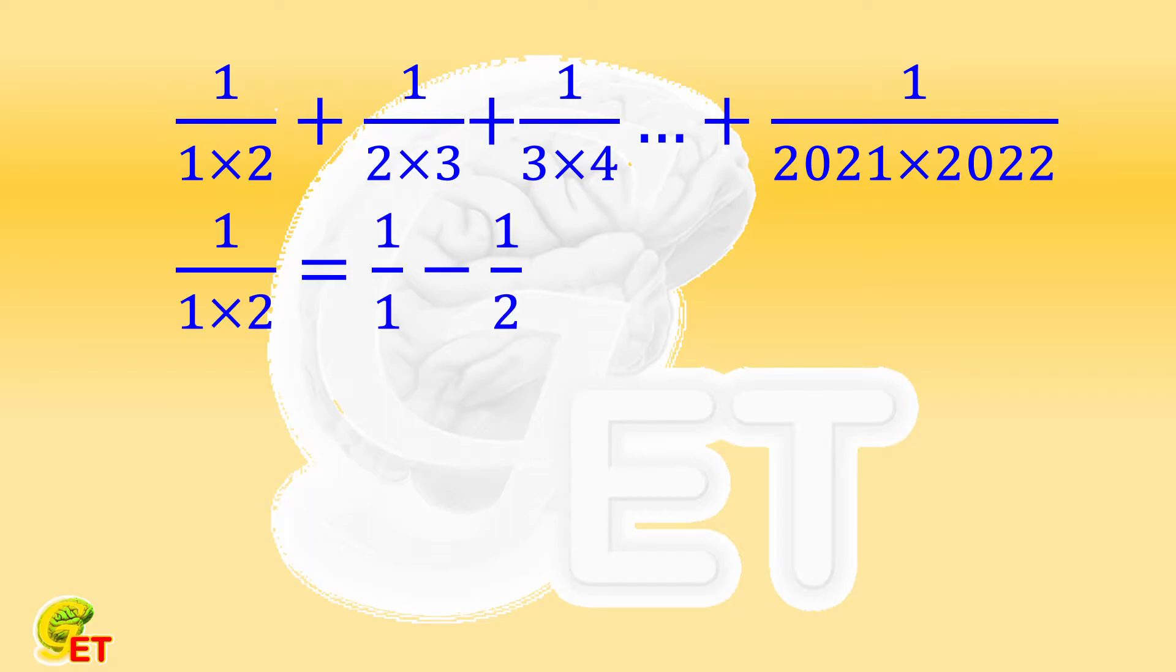Such like, 1 over 1 times 2 equals to 1 over 1 minus 1 over 2. And 1 over 2 times 3 equals to 1 over 2 minus 1 over 3. Therefore,